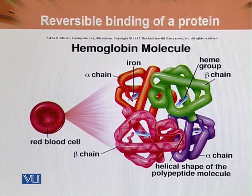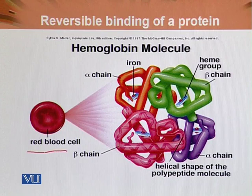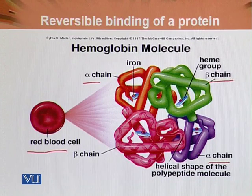This is another, more elaborate diagrammatic presentation of hemoglobin. It shows that hemoglobin has two alpha chains — one alpha chain here and another alpha chain here — and two beta chains, one beta chain here and one beta chain here.